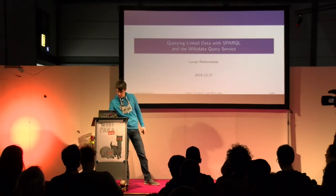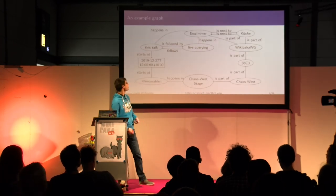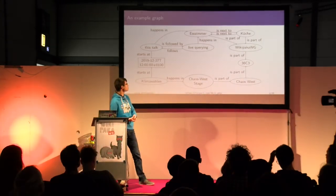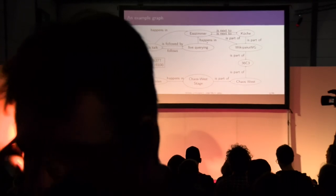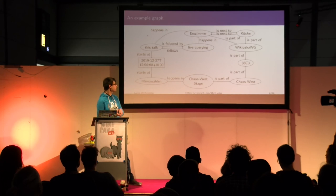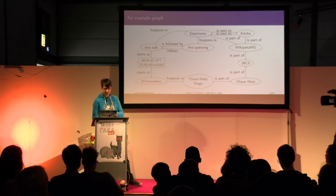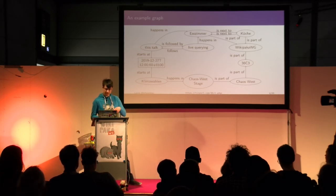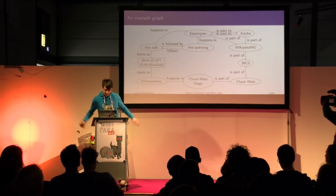Let's start with some simple fantasy linked data. This is a tiny snippet of linked data — a data graph. It's composed of nodes, which are these ovals and rectangles, connected with arrows. Each of these forms a triple consisting of the start node, the arrow, and the end node. That's how we represent all the information in this linked database. For example, we can read this as: this talk right now happens in S-Cimer, the dining room — the name of this stage here.